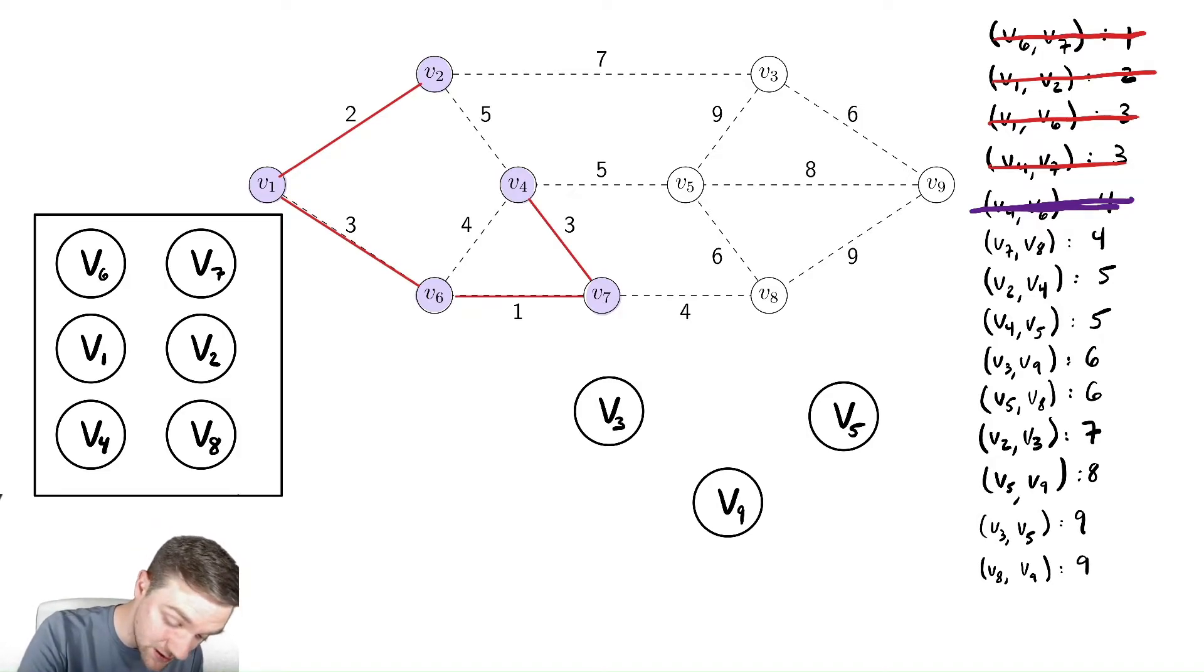And then add the edge between v7 and v8 to the minimum spanning tree. So we add the edge and add v8.